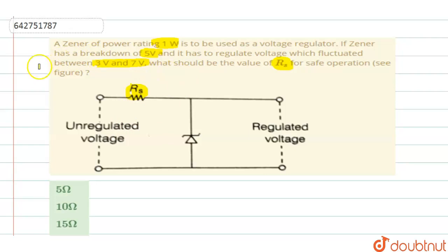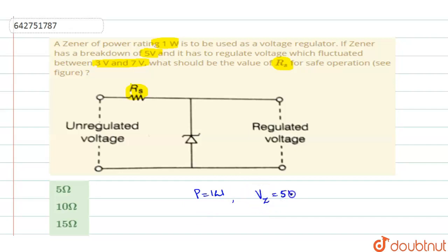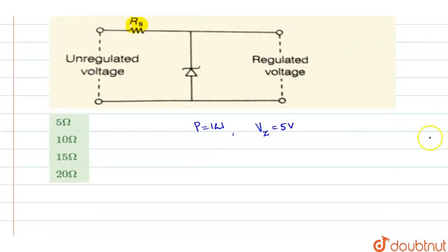Now, the given values: power is 1 watt, the zener breakdown voltage Vz is 5 volt, maximum voltage from the unregulated supply is 7 volt, and minimum is 3 volt.